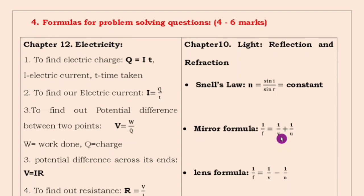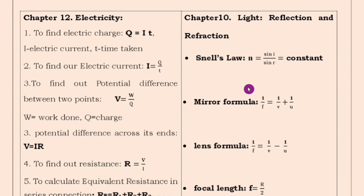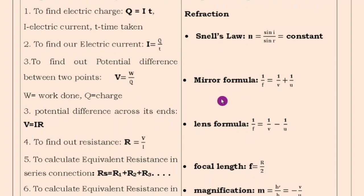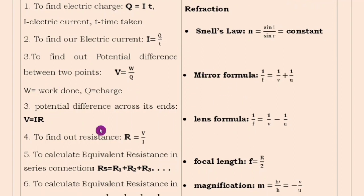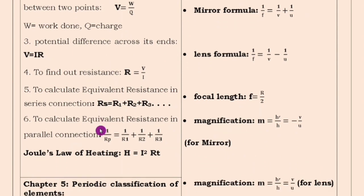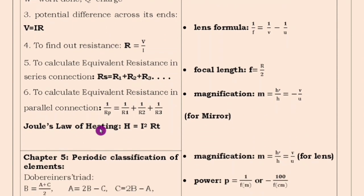If you practice, it's very easy. The last important section is formulas because directly or indirectly they are going to ask formulas, and when you are solving problems they will be useful. For example, Snell's law — this time they may not give a problem — but mirror formula and lens formula: by using the focal length you have to solve the problem. So you have to learn. Some problem formulas I have given here. Write them together and practice thoroughly.